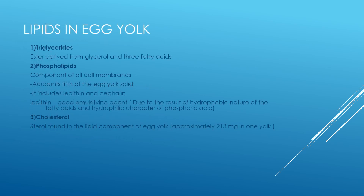The yolk contains several different lipid compounds. About half of the lipids in the yolk are triglycerides, which are esters derived from glycerol and three fatty acids. The others are phospholipids — components of all cell membranes — that account for one-fifth of the egg yolk solids. These include lecithin and cephalin. Lecithin is known for its very good emulsifying quality, which is important in making mayonnaise and other recipes that require emulsification.